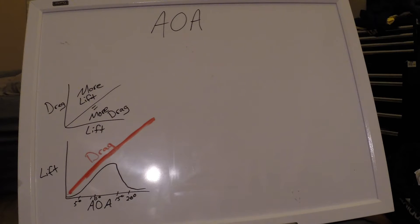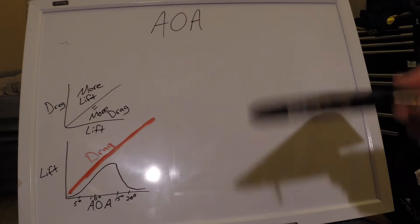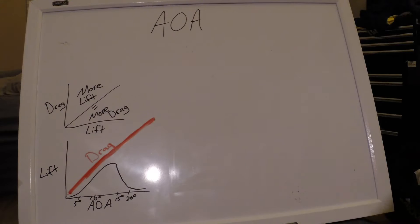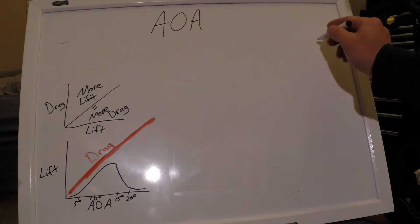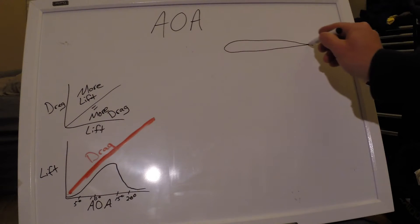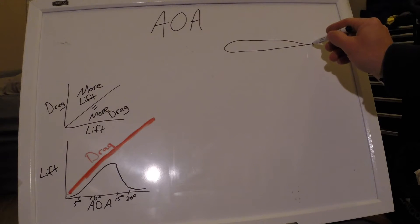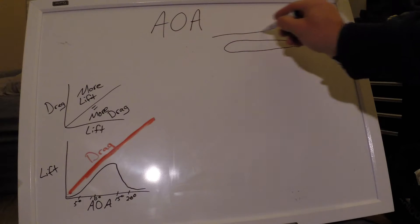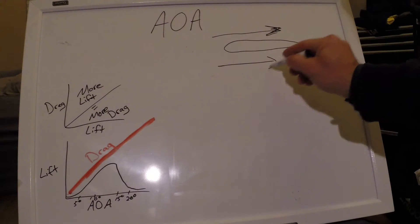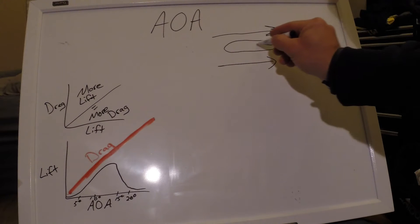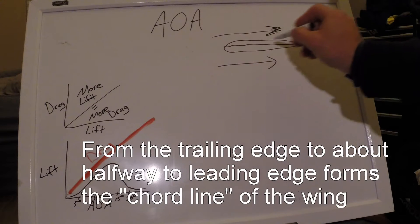That's our AOA up there at the top of the board, and we've got our skeg here from our boat. We'll go ahead and draw what an aircraft wing looks like. Basically it looks just like that, and from the tip of the trailing edge, so the airflow is coming this way, from the trailing edge to the leading edge halfway up the leading edge, that's our cord line.